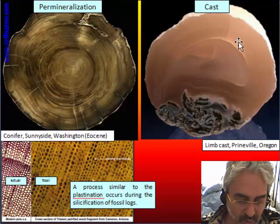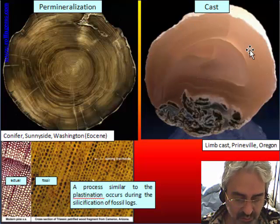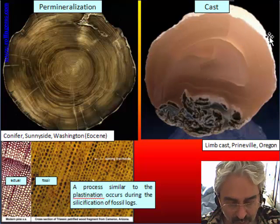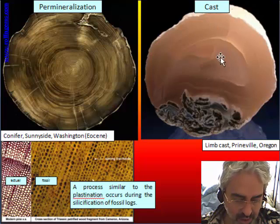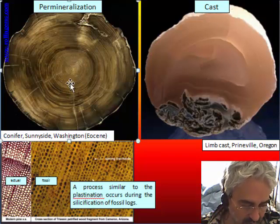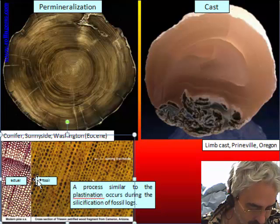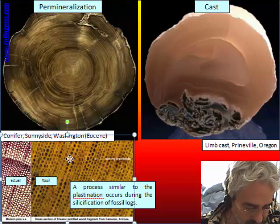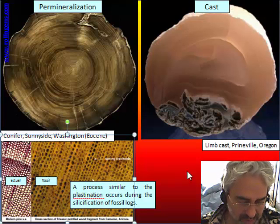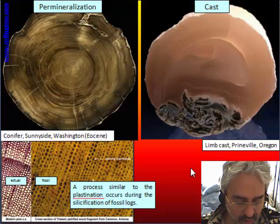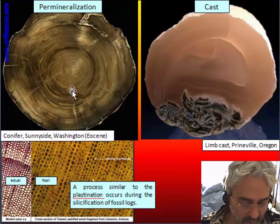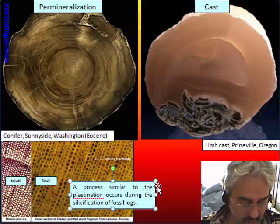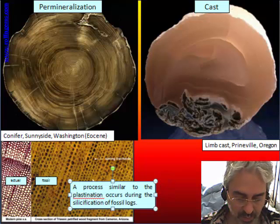There is also a cast type — an empty space left by the wood filled with agate, preserving only the outer shape but changing the inside. By contrast, permineralization preserves all the structure and the rings of the wood. This is an actual wood and this is a fossil wood — exactly the same, totally preserved. So the process in nature fills the void left by the wood and has time and temperature for curing the polymer.